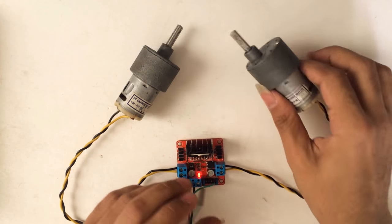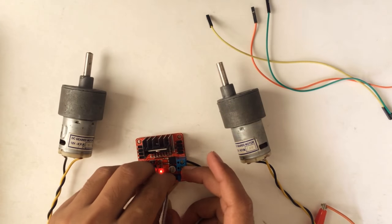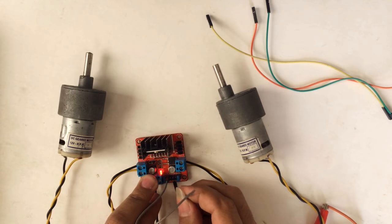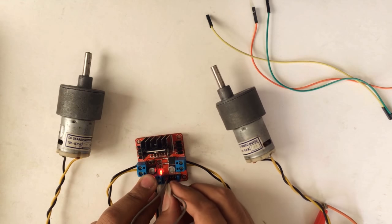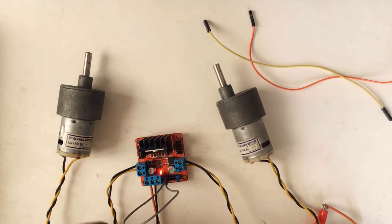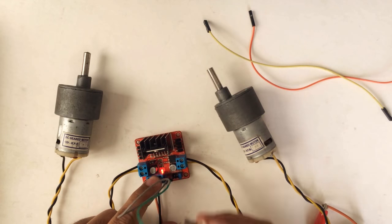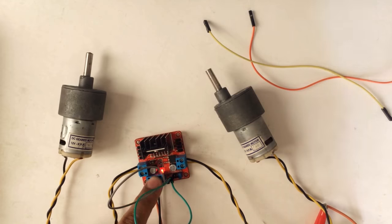For Motor A we first connect to 5 volt and I'll connect this another into IN1. Let's see what happens. Nothing. Okay, for same thing I'll go with IN2. One I gave high, another I gave low.